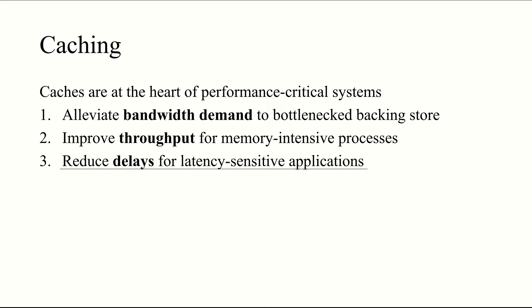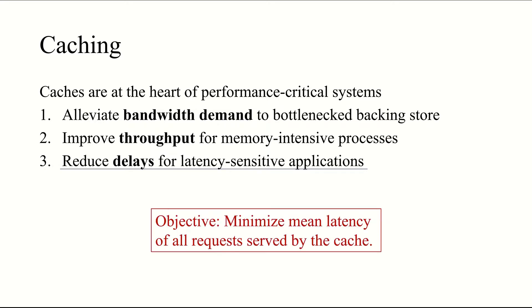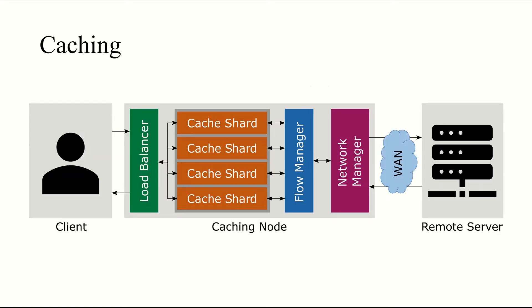Today, we'll focus on this third category of caches, which seek to reduce delays. These are latency-minimizing caches, and their goal is to reduce the mean latency of all requests served by the cache. Here's the latency-minimizing cache we built at CMU, based on Redis, a distributed key-value database.